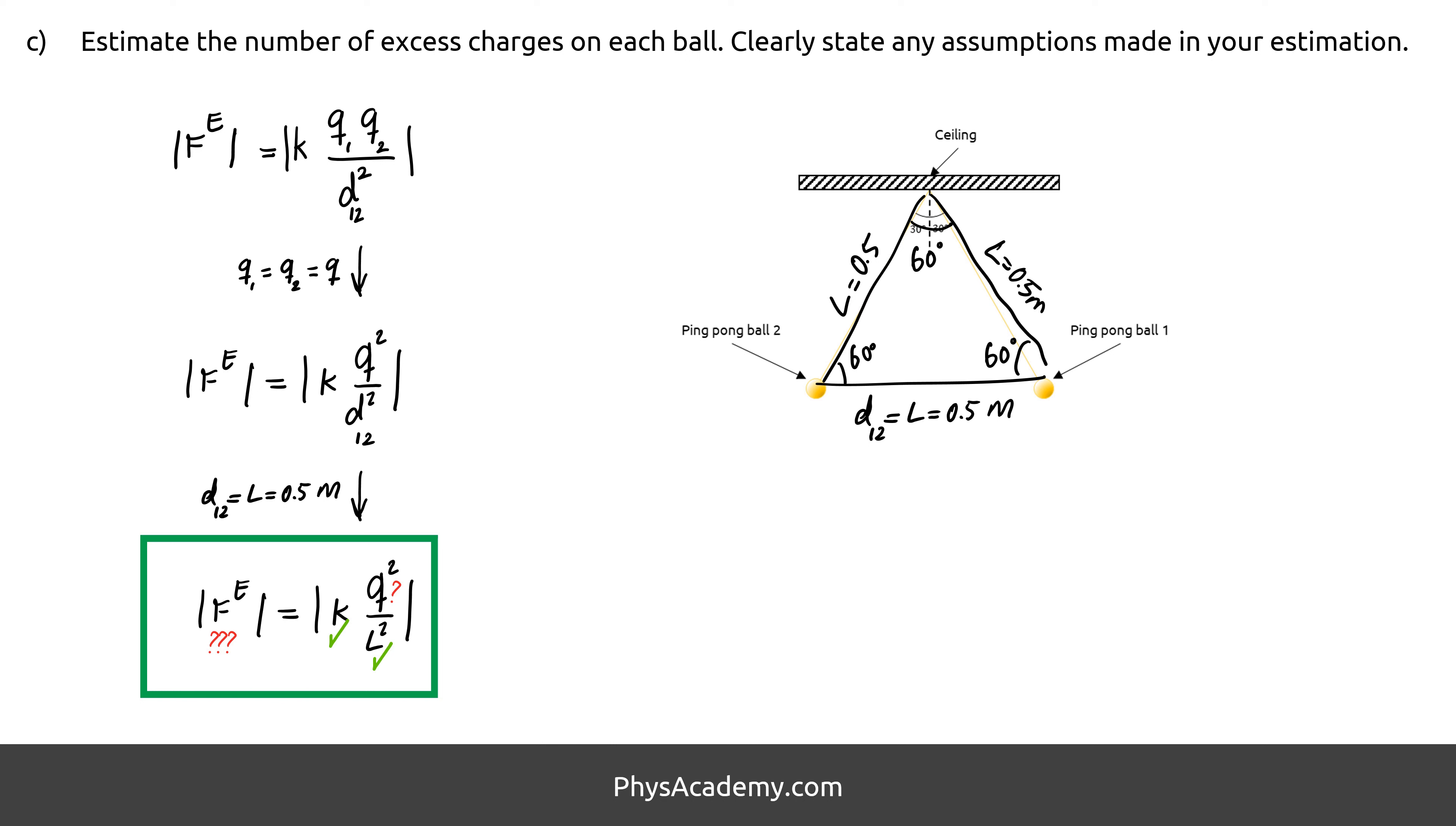After marking the knowns and unknowns of the equation, other than Q, or the final ultimate unknown, F_E, or electric force, also is unknown. We go back to Newton's second law equations to calculate F_E. After calculating F_E, we can plug it into this equation to find Q.